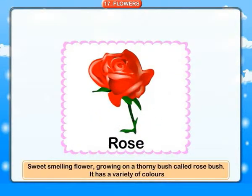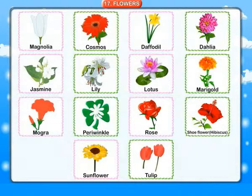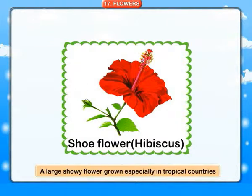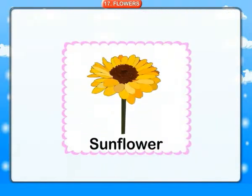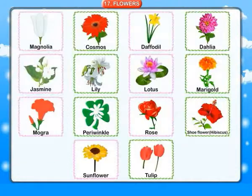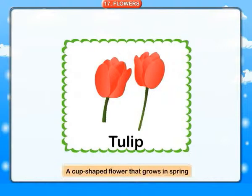Rose: a sweet-smelling flower growing on a thorny bush called rose bush. It has a variety of colors. Shoe flower or hibiscus: a large showy flower grown specially in tropical countries. Sunflower: a large flower with yellow petals around a dark center and edible seeds. Tulip: a cup-shaped flower that grows in spring.